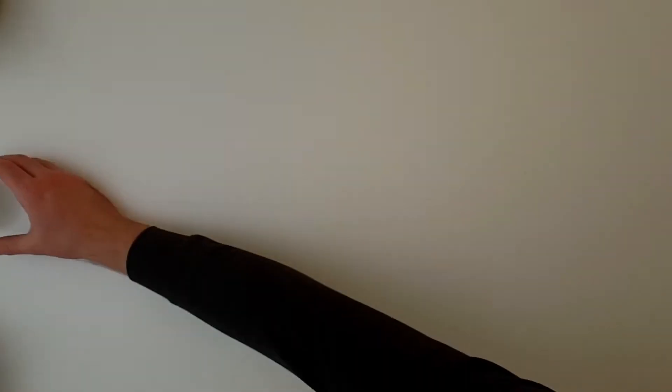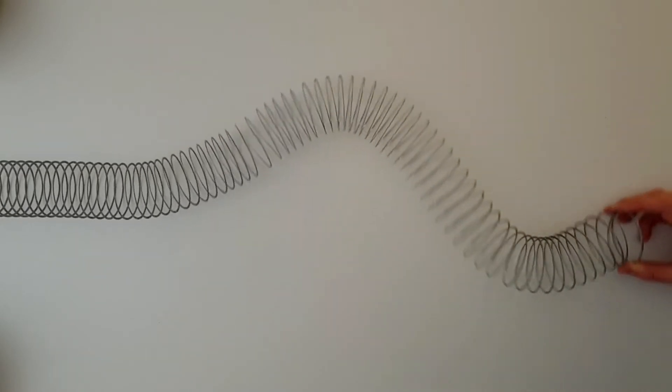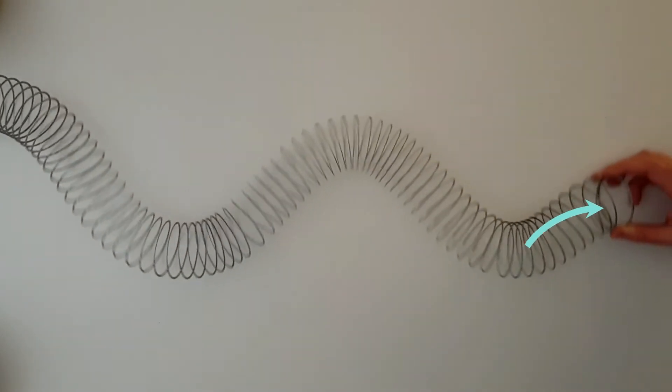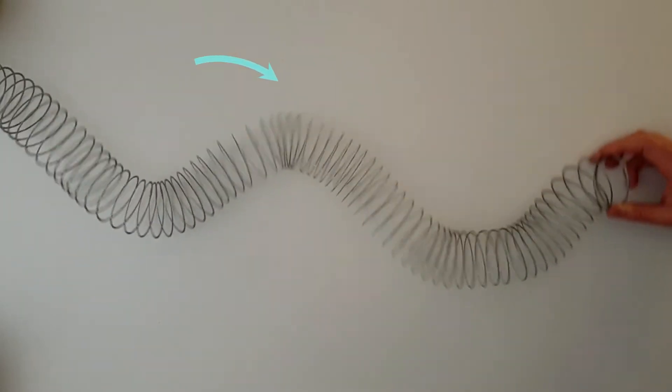So how does this work? To answer that question, we need a slinky! If I move one end of the slinky up and back down, I create a wave. Moving this slinky ring up and down makes all these other slinky rings move up and down as well, one after the other.